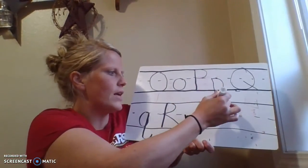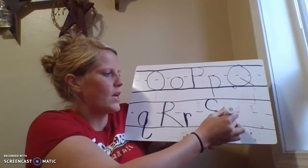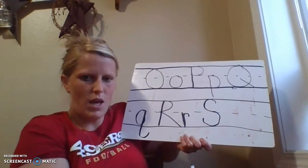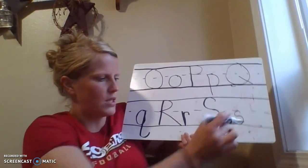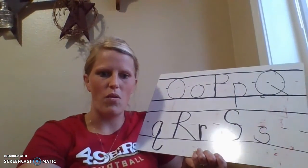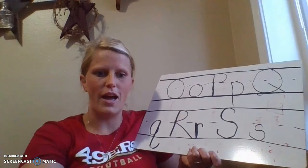For our capital S, we do a forward C and a backward C. Okay? For the little s, it's the same. It's a forward C and then a backward C. And that's how you form our letters O, P, Q, R, and S.